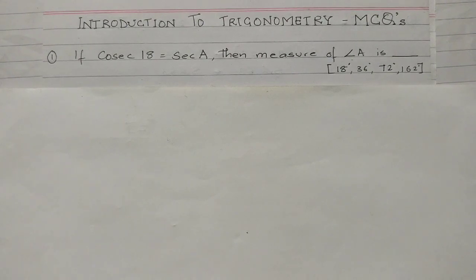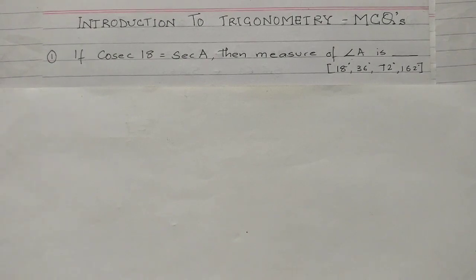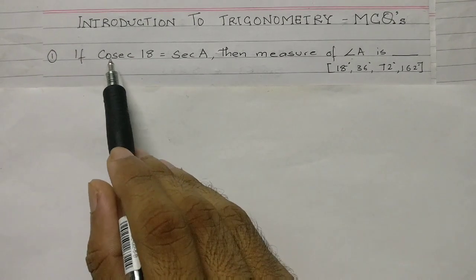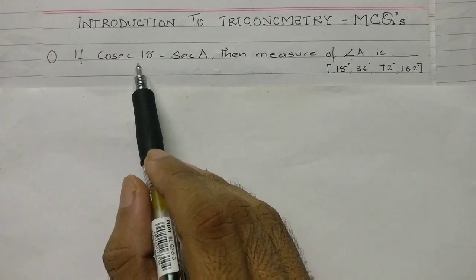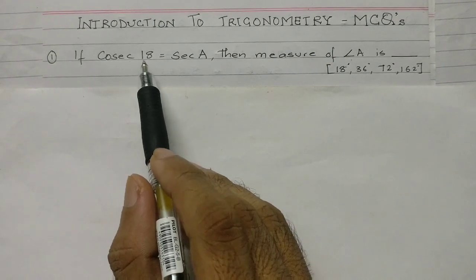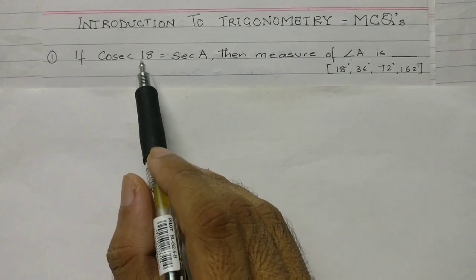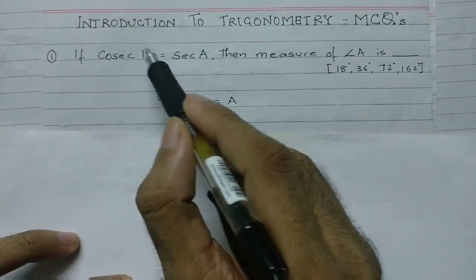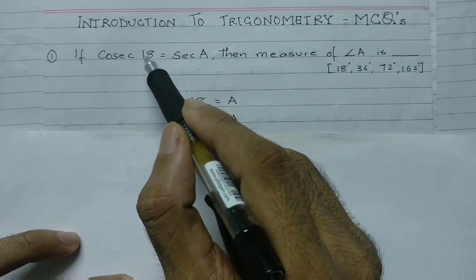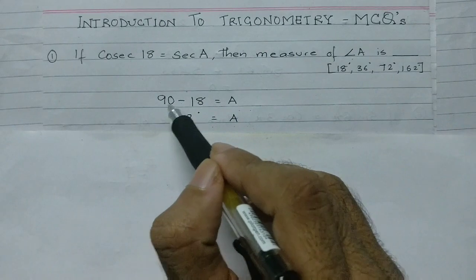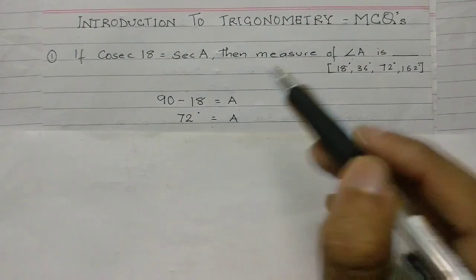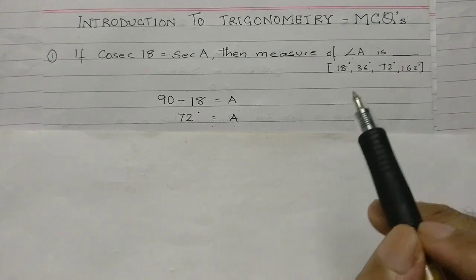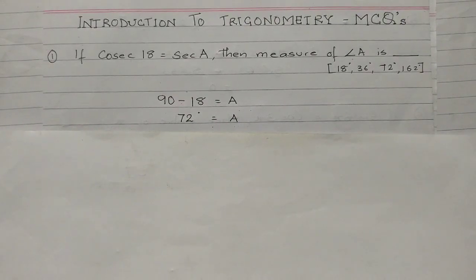First I'll tell you how to quickly solve and get an answer, then we'll understand why. All you have to do is wherever for any function the angle is given, just do 90 minus that angle and your answer is done. So here cosec 18 is given — I will do 90 minus 18, which is 72, and you are done. You will get one mark for this.